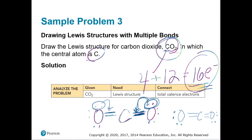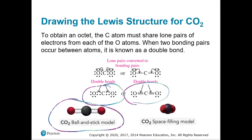Redrawing: the left oxygen now has two sets of lone pairs and shares one lone pair with carbon as a double bond. The right oxygen also has two sets of lone pairs and shares one with carbon. Now counting: each oxygen has eight — happy. Carbon has eight — happy. Everybody has an octet. Here's the ball-and-stick model showing the double bonds and the space-filling model.